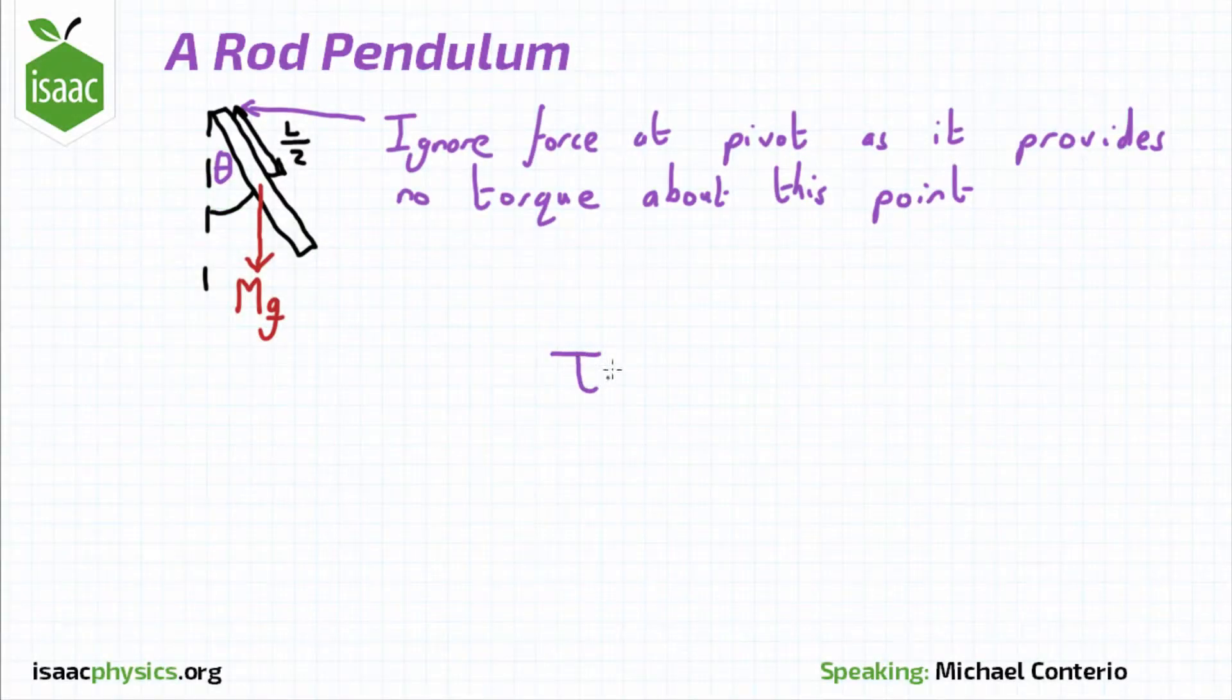To find the equation of motion, we need to use the rotational form of Newton's second law, which is tau is equal to I alpha.